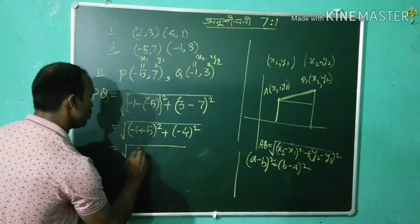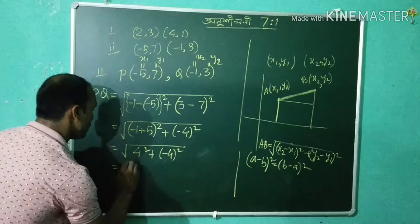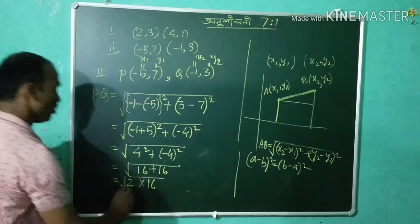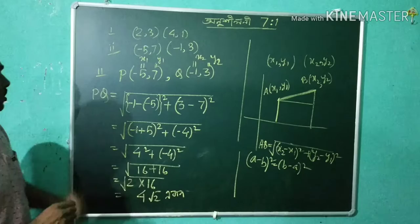That gives (minus 1 plus 5) whole square plus (minus 4) whole square, which is 4 squared plus minus 4 squared, equal to 16 plus 16, that is 2 times 16. The square root is 4 root 2. So PQ equals 4 root 2.